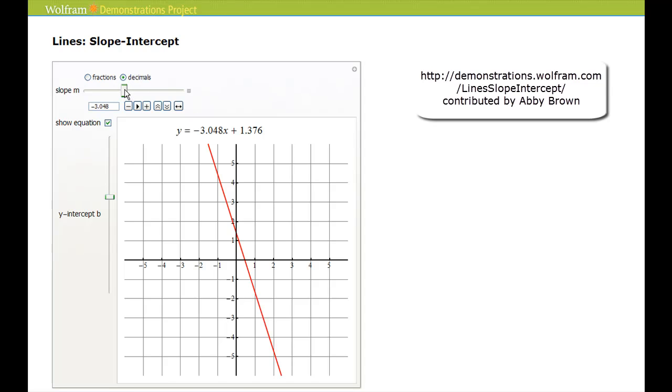If I change the slope to negative 6, using the same idea, I'd have to pick a point and now go down 6 units and right 1 to find another point on the line. So it becomes even steeper downhill from left to right.